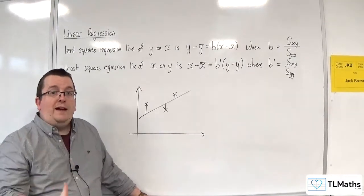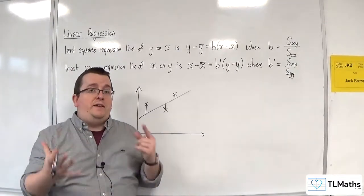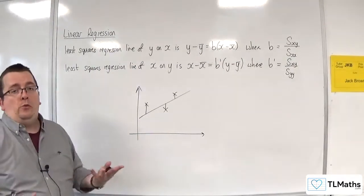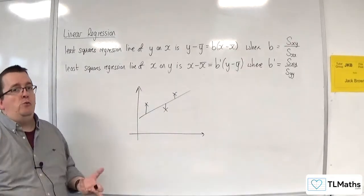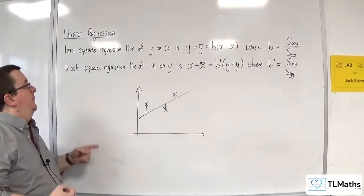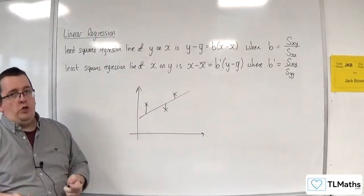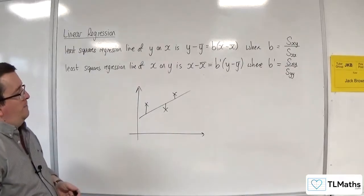The way to avoid that, similar to the standard deviation formula, is that you square them all. So that's where you start to minimise the squares of those distances, and hence the least squares regression line. That's where the name comes from.